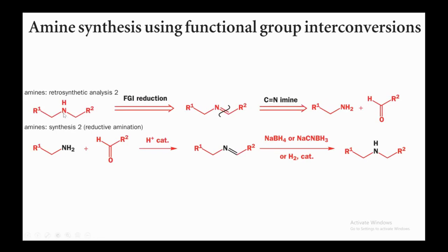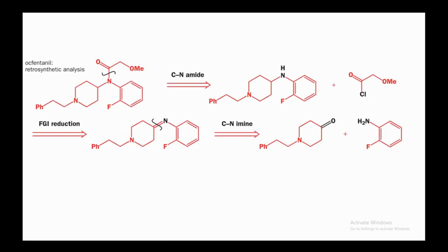For secondary amines, a slightly different approach: convert the secondary amine into an imine using FGI reduction — react the amine with an aldehyde or ketone to form the imine. Then disconnect the C–N bond; this gives simple starting materials: an amine and an aldehyde. In the forward direction, react the amine and aldehyde with an acid catalyst to form the imine, then reduce with sodium borohydride, sodium cyanoborohydride, or H2 catalyst to give the secondary amine. This imine-based approach (reductive amination) is the preferred strategy for secondary amine synthesis.